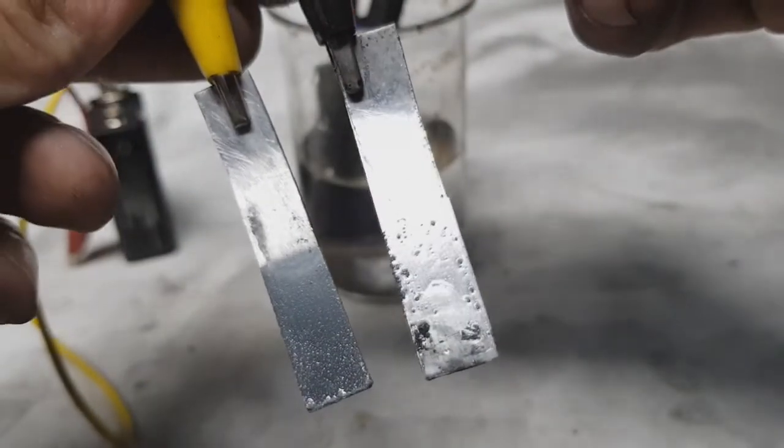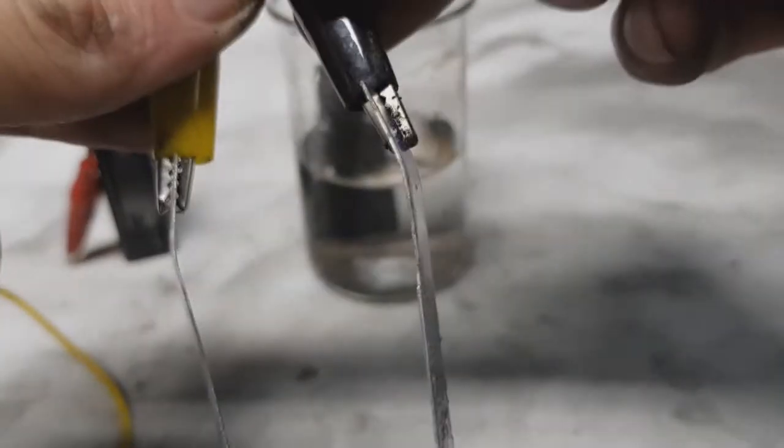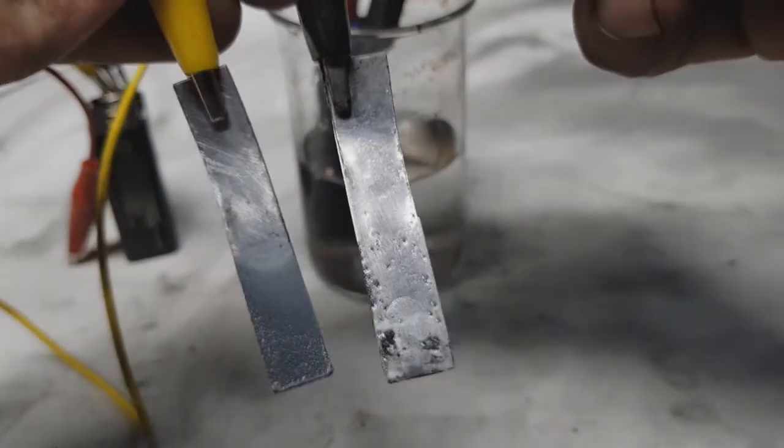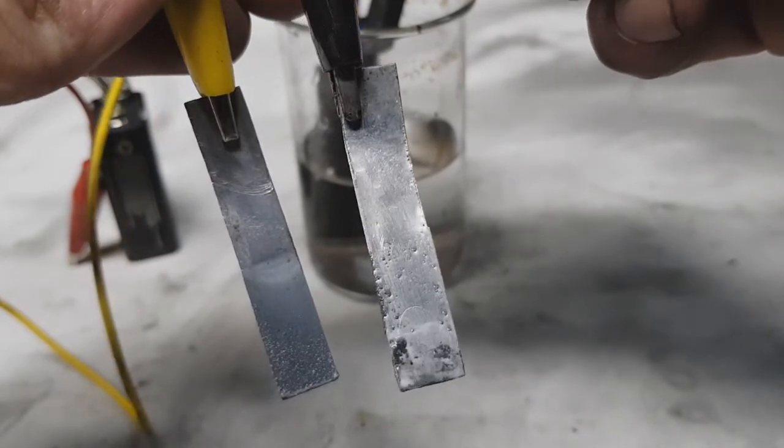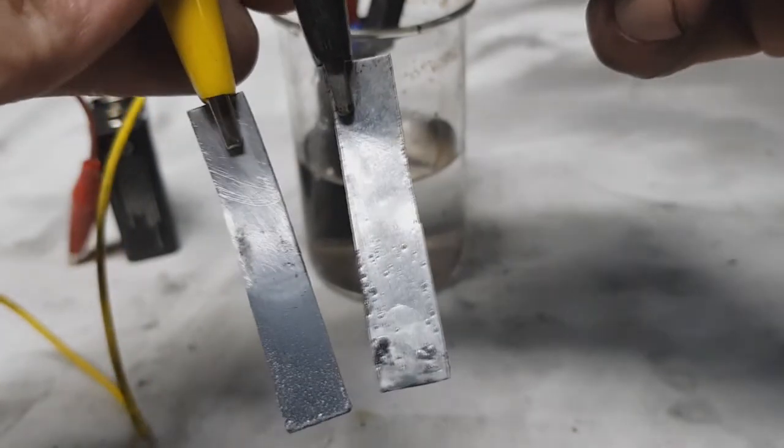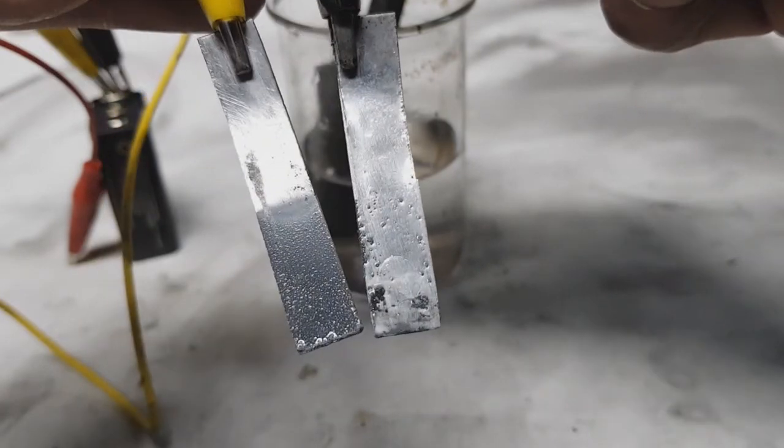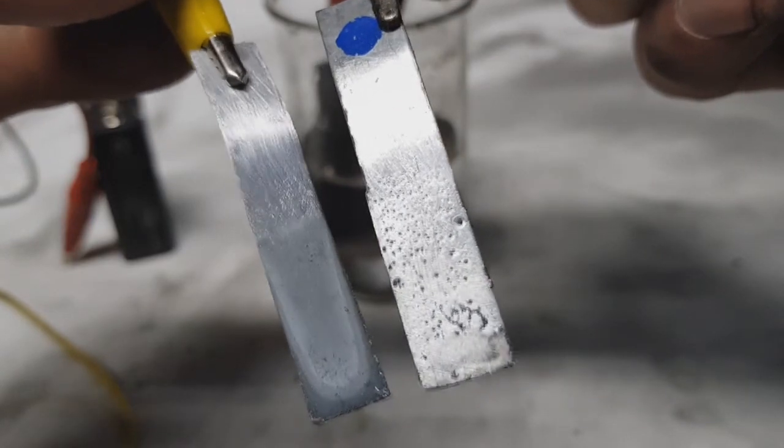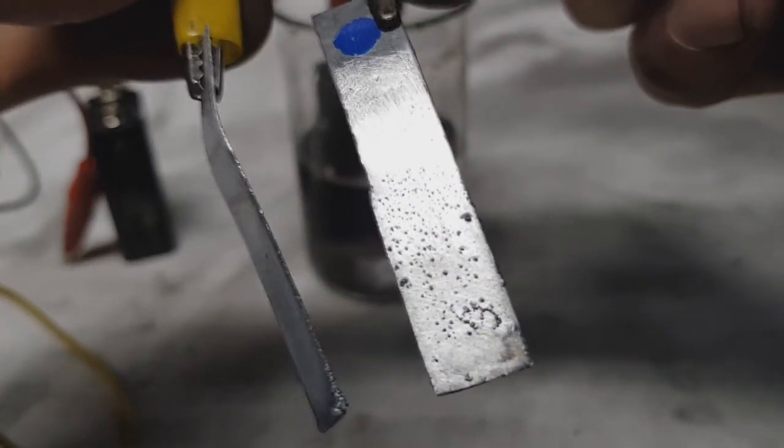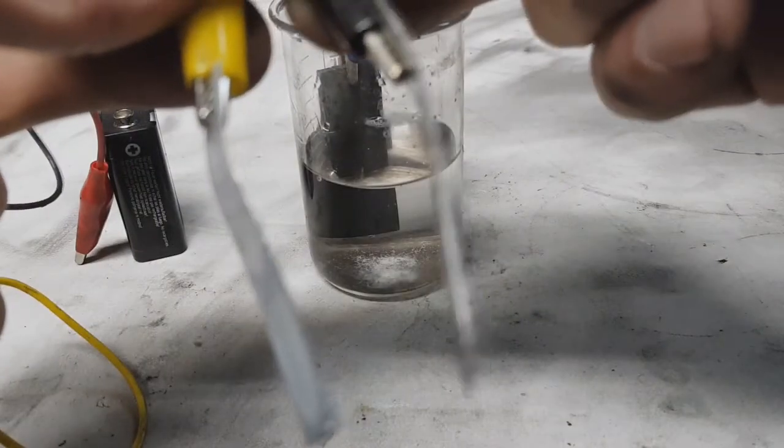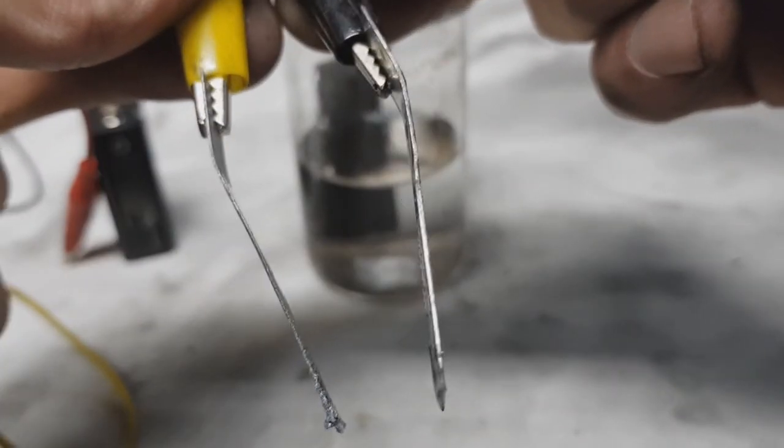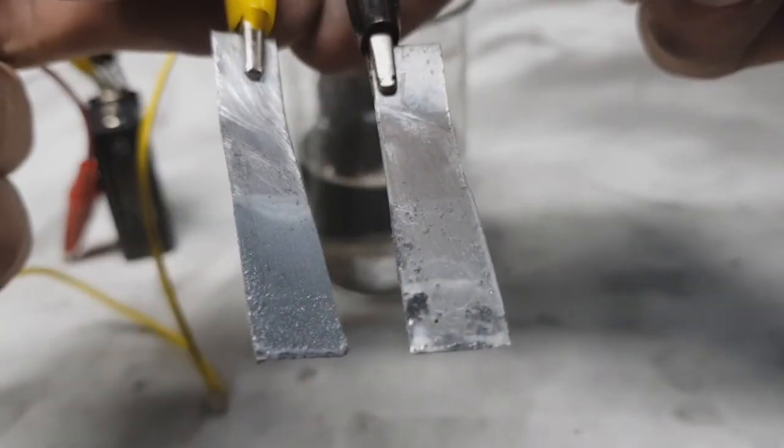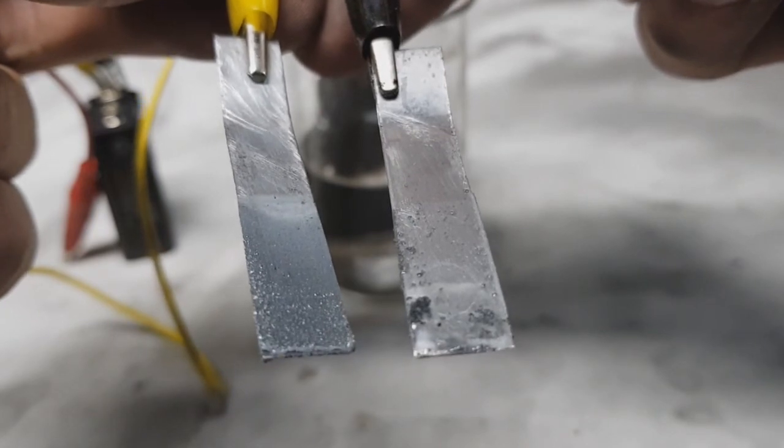So this is the front, the front side of each electrode, and you can see the difference. This is the back. So this is a really different story.